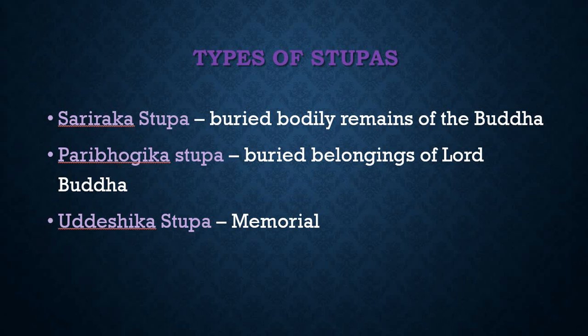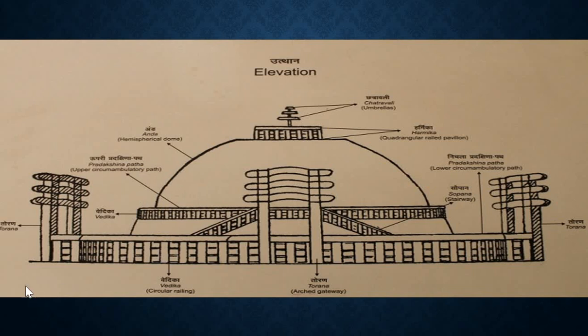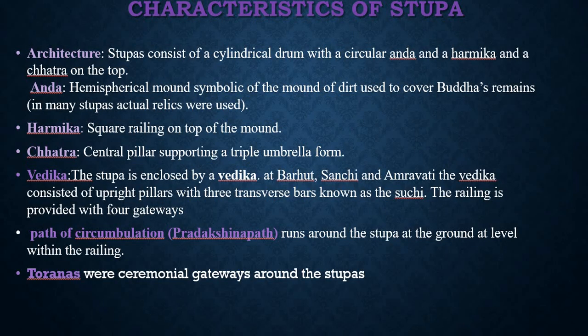There is the Paribhogika Stupa — built over the buried belongings of Lord Buddha. All of Buddha's belongings also had a Stupa built over them as objects of veneration. Buddhism thus converted Buddha's relics plus his belongings into Stupas. The Uddeshika Stupa is a memorial — the bodies and relics of saints and renowned preachers are converted into Stupas with the purpose of renewing Buddhism. This is the diagrammatic form of the Stupa.